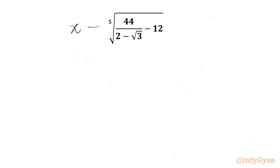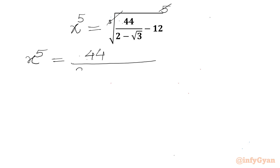Let us get started by considering this expression equal to x. Now raise both sides to the power 5. The 5th root and power 5 will cancel on the RHS, so we can write x⁵ equal to 44 over (2 minus square root 3) minus 12.